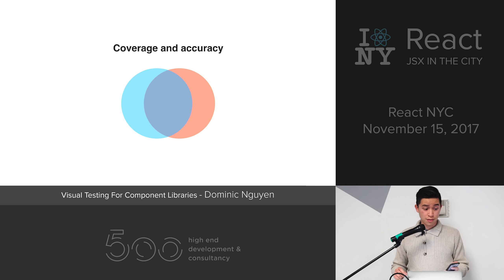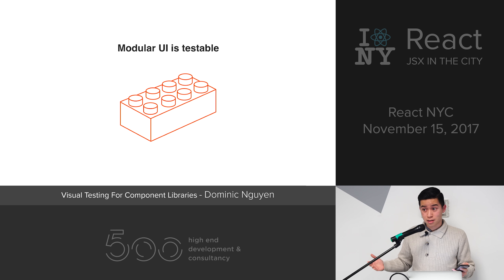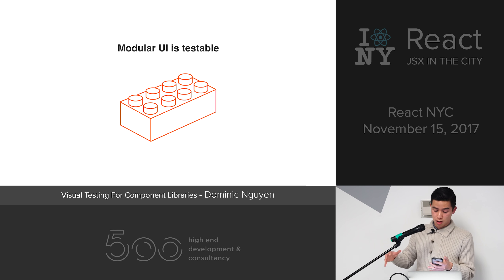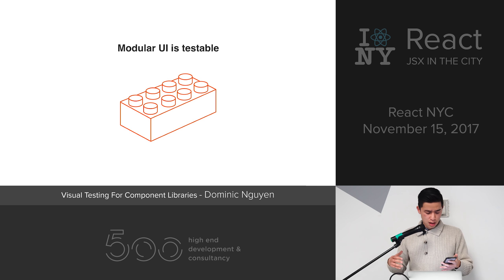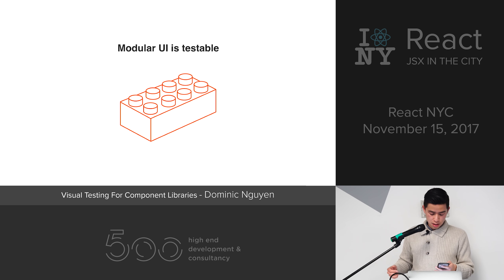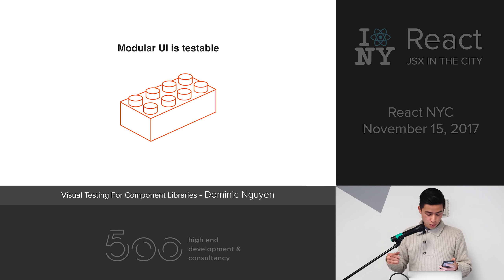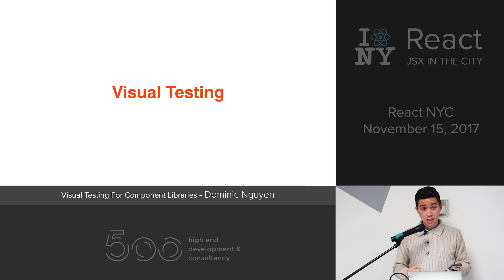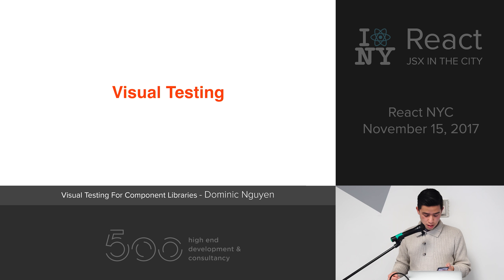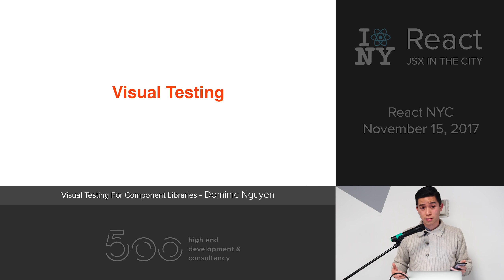So let's look at a different approach that achieves the coverage of automation and the accuracy of manual tests. React, along with pretty much every other modern view layer, centers on this idea of components. The pattern provides a well-scoped and modular way of building and testing user interfaces. By testing UI components — the essential building blocks of user interfaces — we get great coverage and more accurate tests. Visual testing involves defining the states of a component, then verifying that it renders as expected during testing. It focuses human testers on the exact states of the components that require attention and that you explicitly support.